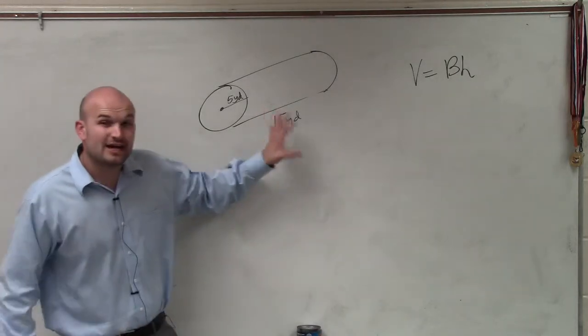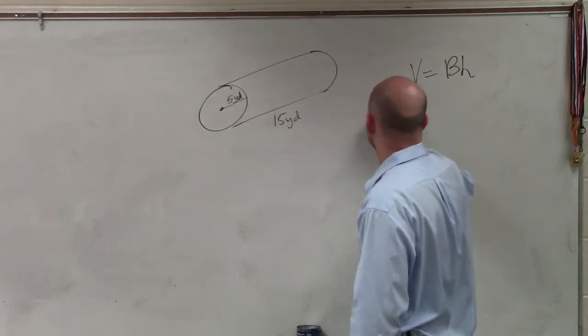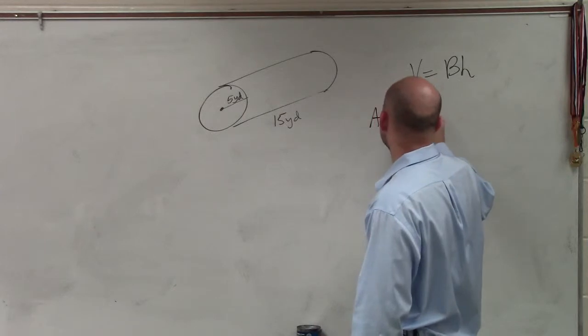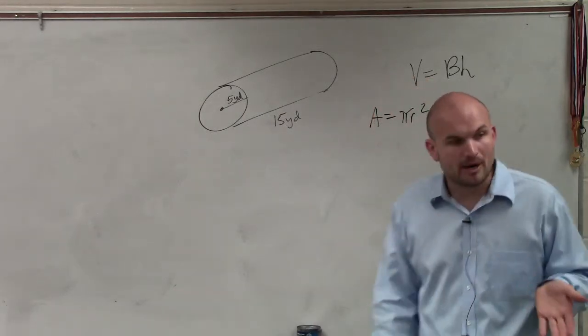So to find the area of the circle, all we simply need to do is pi r squared, where r represents our radius.